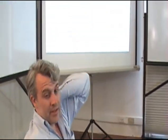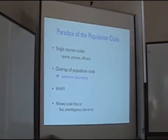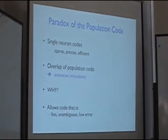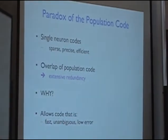Redundancy reduction has been a very influential idea for the last 50 years, and at least at the level of the entire population, it's just completely wrong — that's not what the retina is doing. You might wonder why, since redundancy reduction seems like a good idea — you get a more efficient code. So why is this code so inefficient? The idea I'm going to pursue is that redundancy is actually a beneficial property of the population code, and it allows the population code to be fast, unambiguous, and low error.